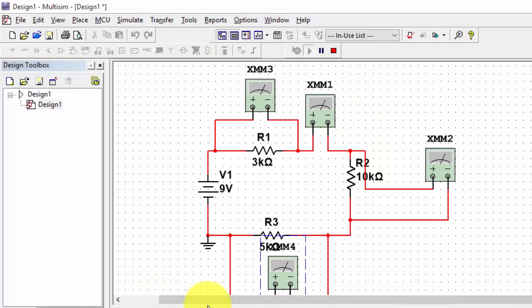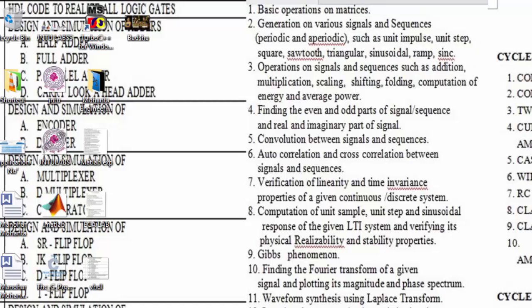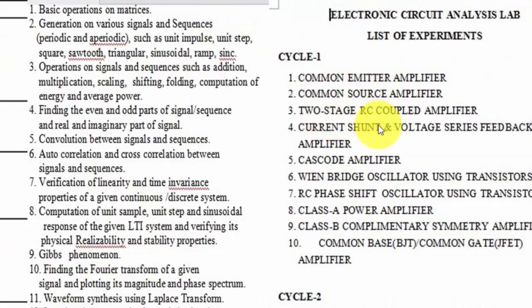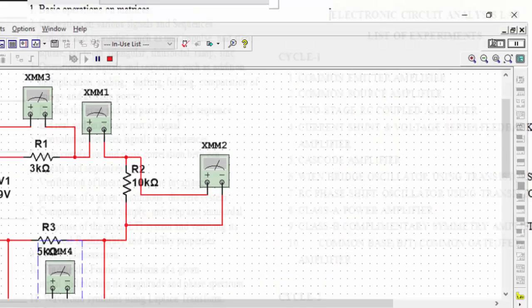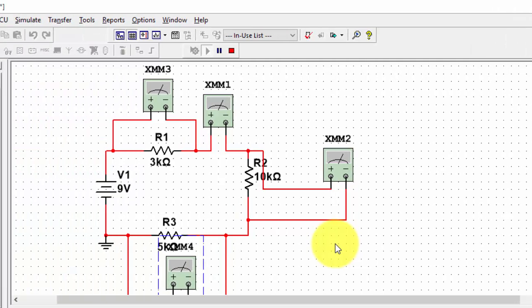In our next tutorials, we are going to see how to build circuits like class amplifiers, common emitter amplifier, common source amplifier, two-stage RC coupled amplifier, current shunt and voltage series feedback amplifier, pass amplifier, and oscillators. We will be covering everything in our next videos. Thank you for watching — please like, subscribe, comment, and share.